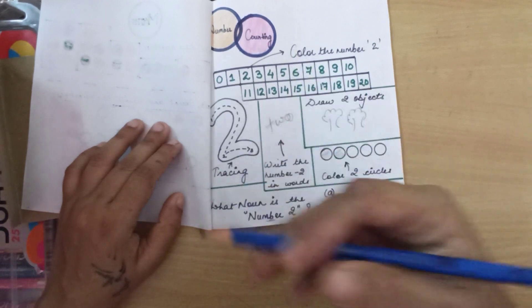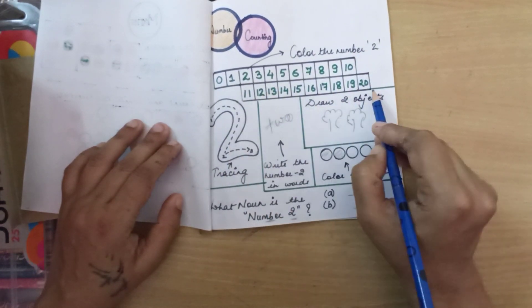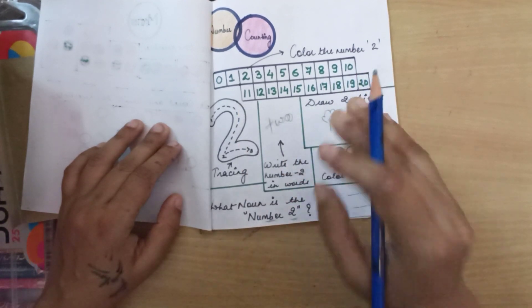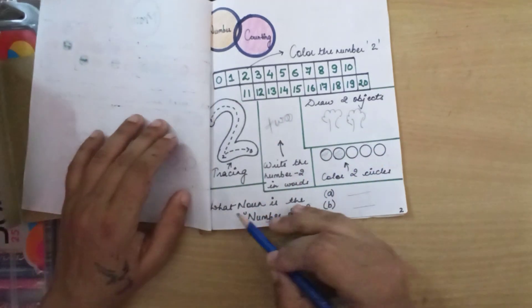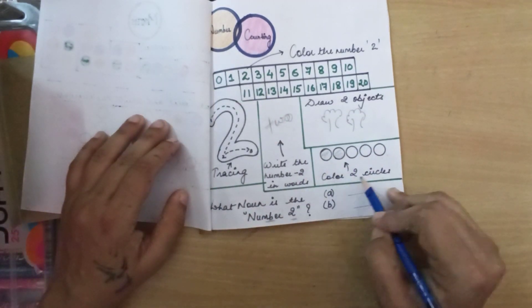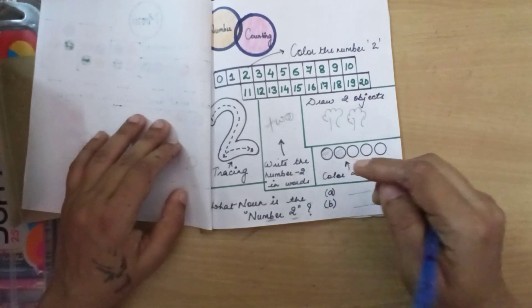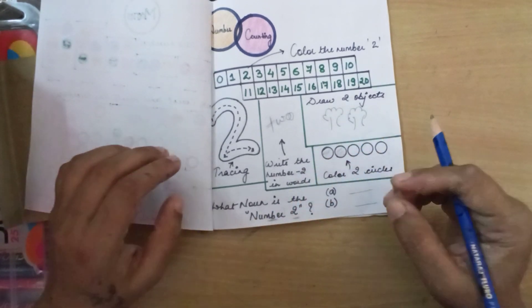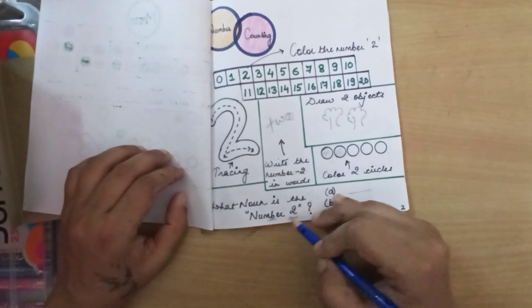I have put this arrow just to give you a reference. You just need to write color the number two. The kid has to search where it's two. I've written here till 20. If your kid doesn't know till 20, it's totally fine. You can just write down till 10 and help them with any number you pick up. Then I've written color two circles. I've made five circles on purpose so she can pick up any two circles and color them. Then I've also put up the question because she's learning about grammar these days in class.